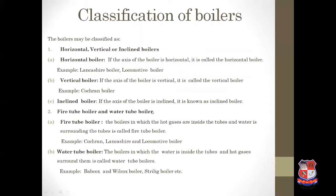Now, classification of boilers. Boilers may be classified in various categories. First, horizontal, vertical, or inclined boilers. If the axis of the boiler is horizontal, it is called a horizontal boiler — examples are Lancashire boiler and locomotive boiler. If the axis is vertical, it is called a vertical boiler — example is the Cochrane boiler. If the axis is inclined, it is called an inclined boiler.